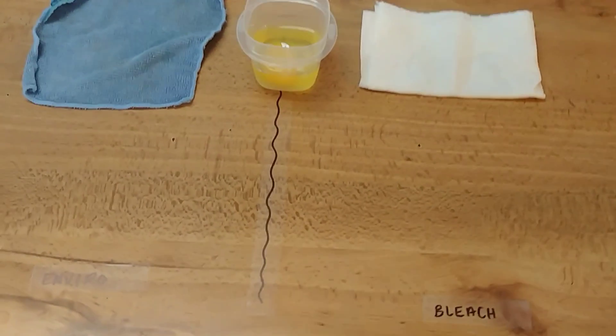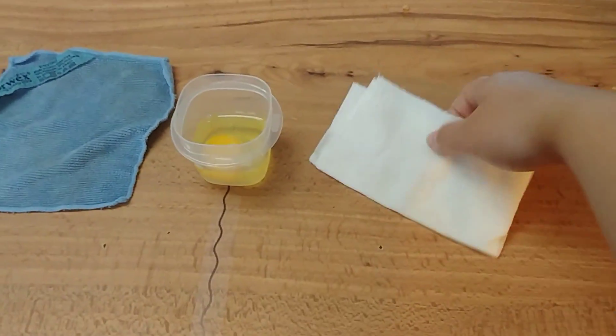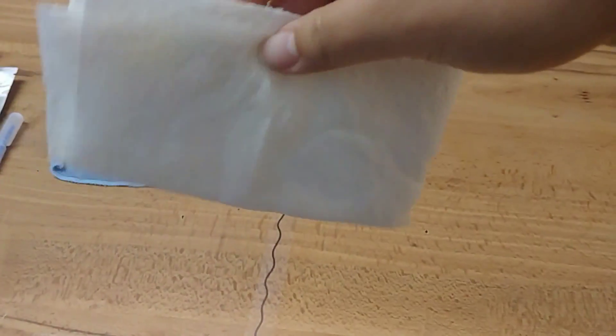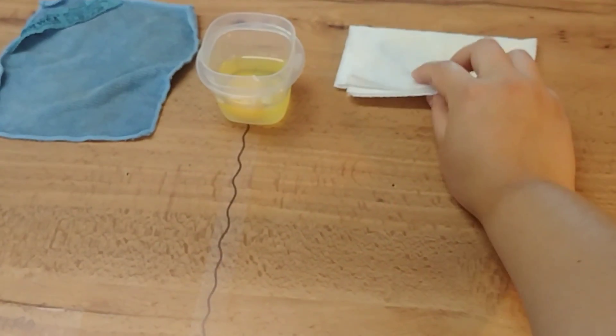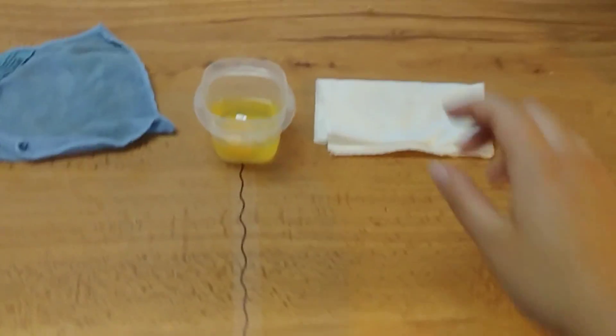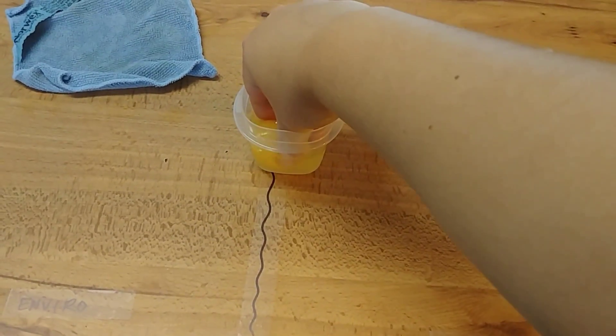Alright, so let's give it a try here. This paper towel, you can see I've wet it with some water and put some bleach water on there. It's pretty damp. And this I've just dampened with water.